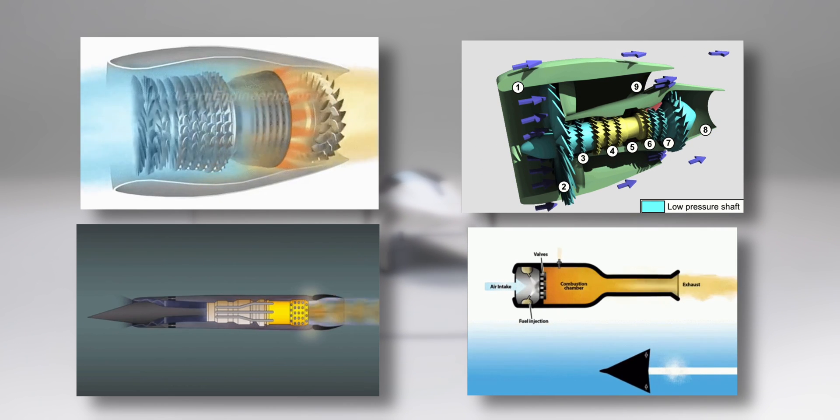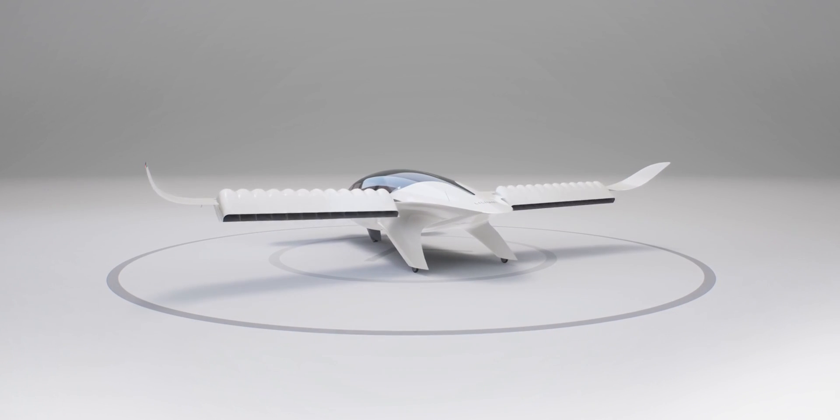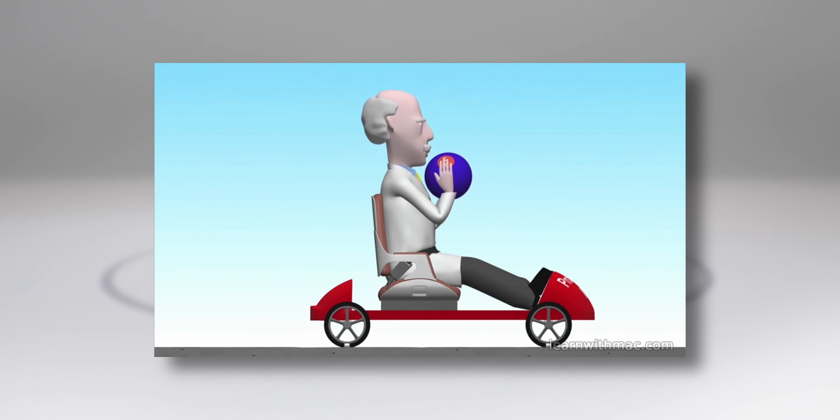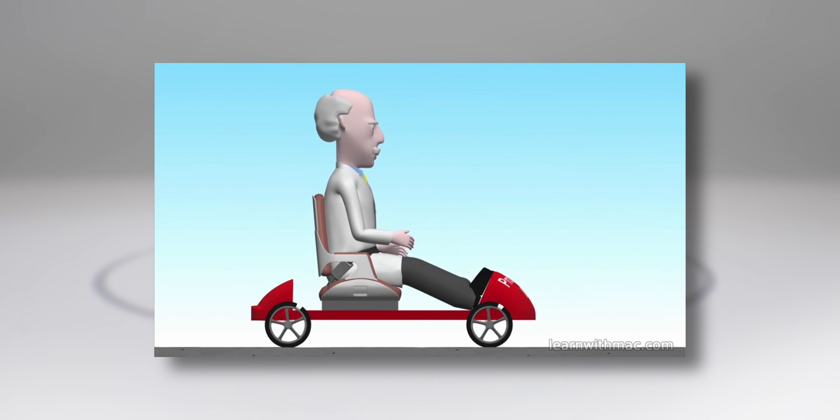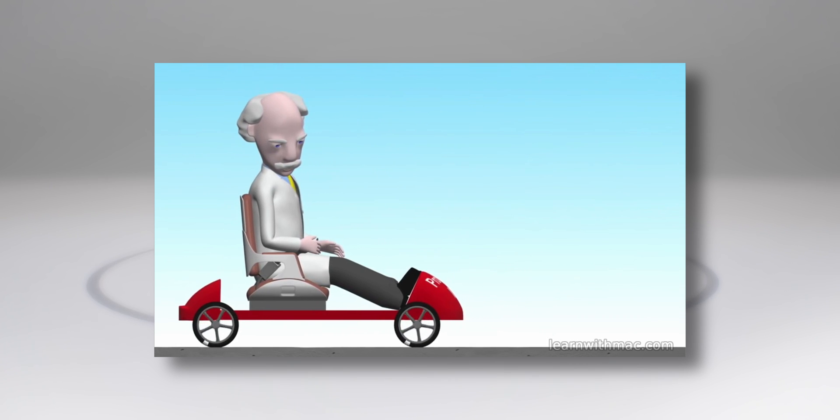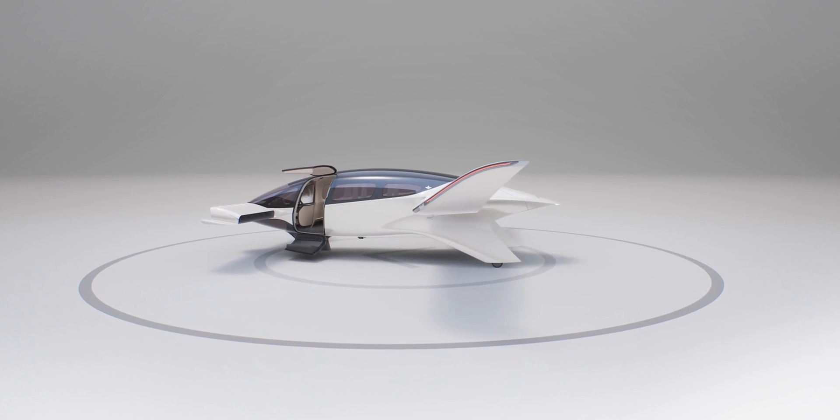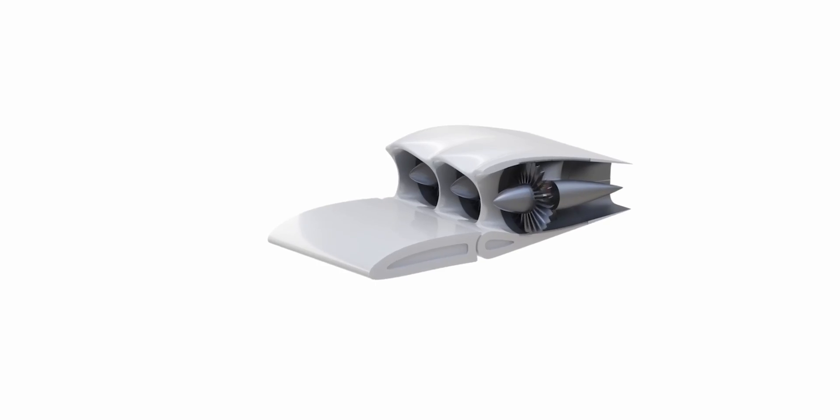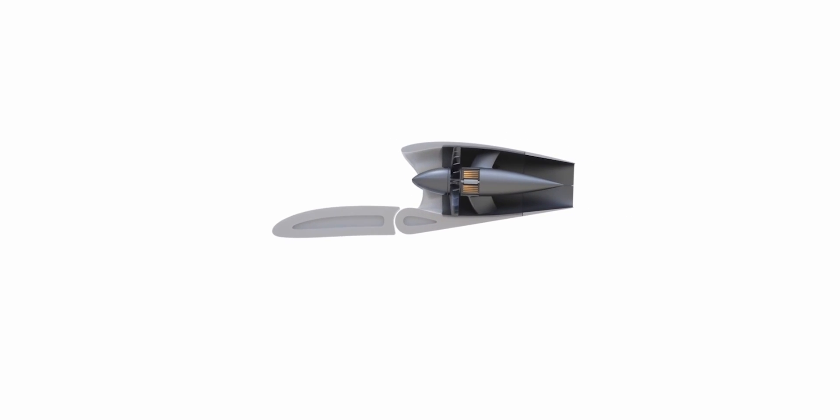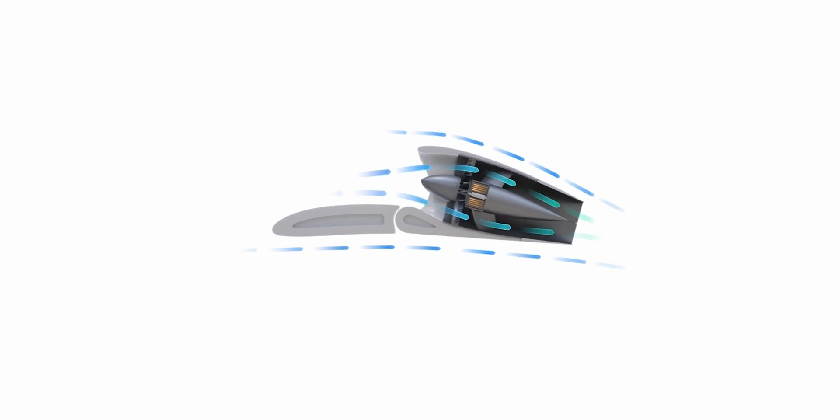Jet propulsion is a practical application of Isaac Newton's third law of motion, which states that for every force acting on a body there is an opposite and equal reaction. For aircraft propulsion, the body is atmospheric air that is caused to accelerate as it passes through the engine. The force required to give this acceleration has an equal effect in the opposite direction, acting on the device producing the acceleration.